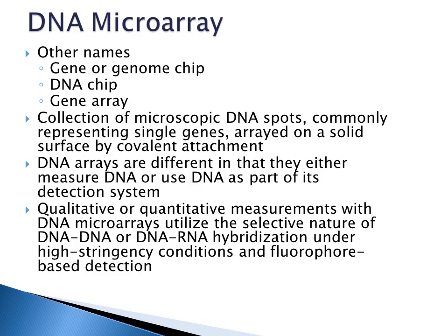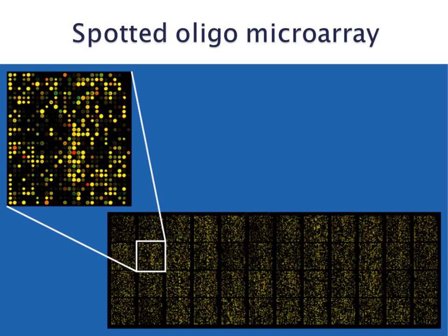Here's an example of a spotted oligo microarray. Your oligos are short, single-stranded DNA pieces, and your entire array has many, many spots on it. If you take one section and blow it up, you can see your array. After you run your array, you're going to get the development of different colors, which we'll discuss later in this lecture.